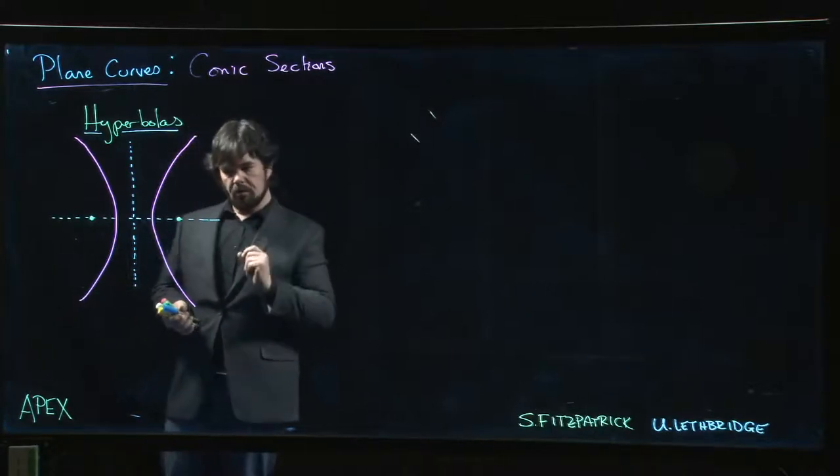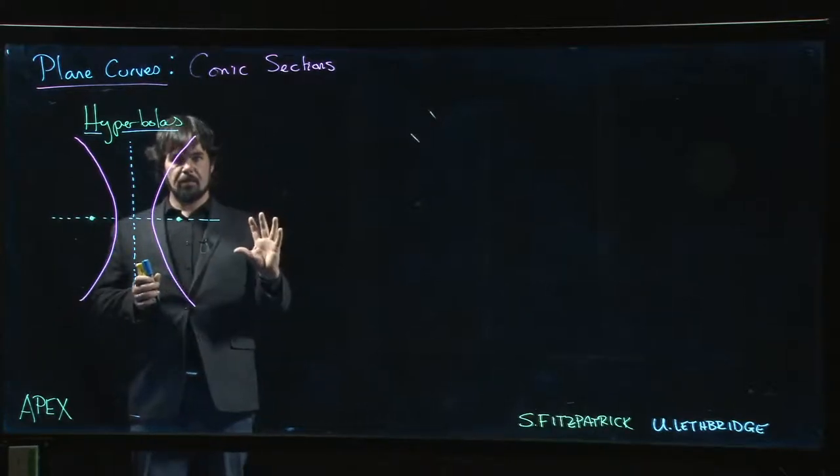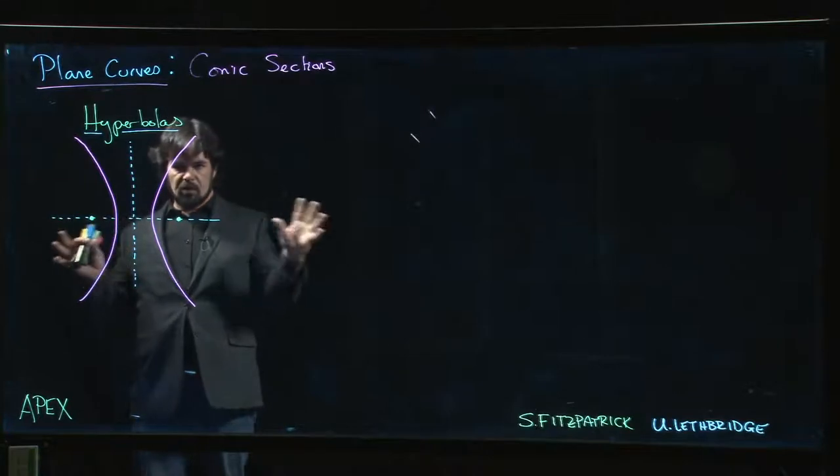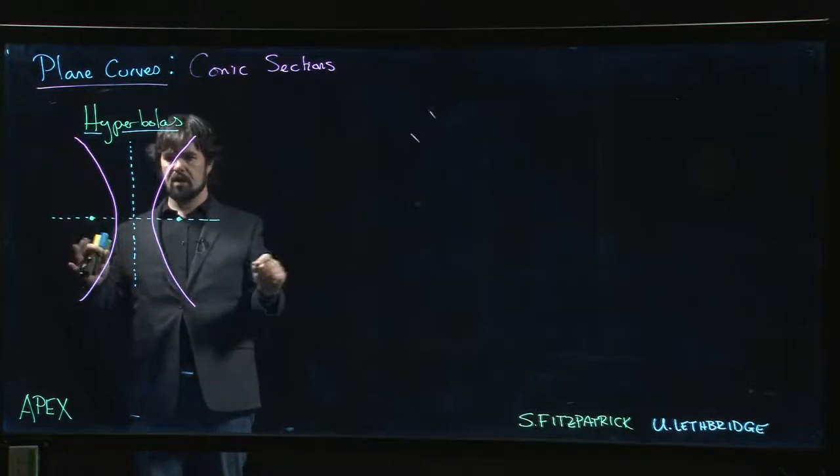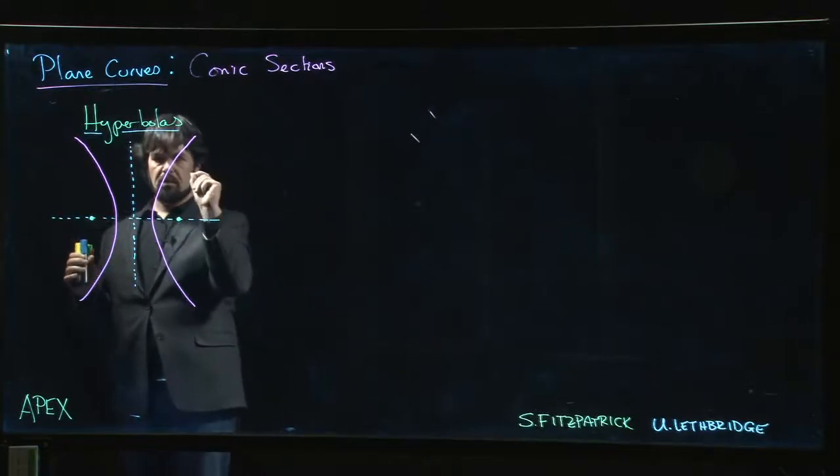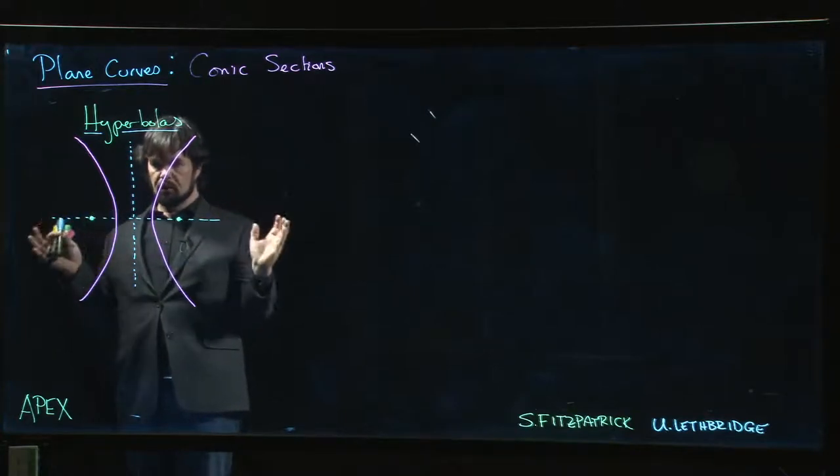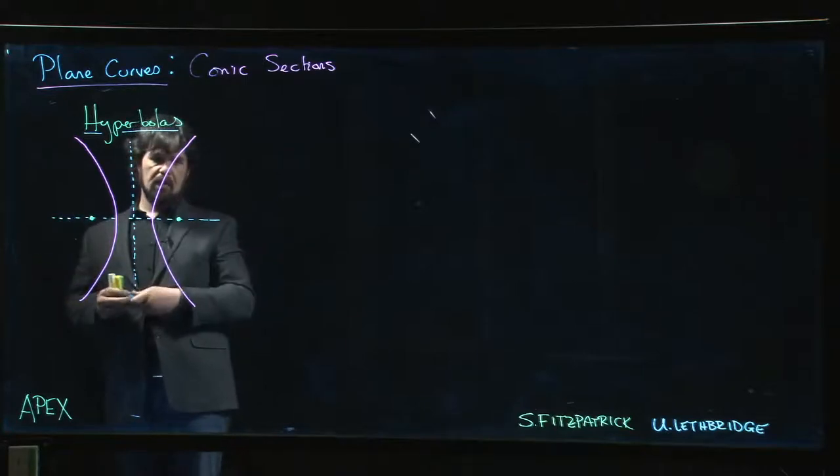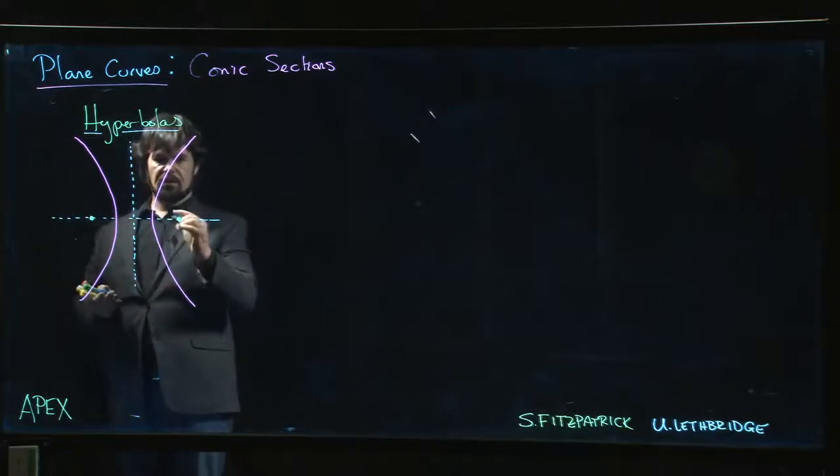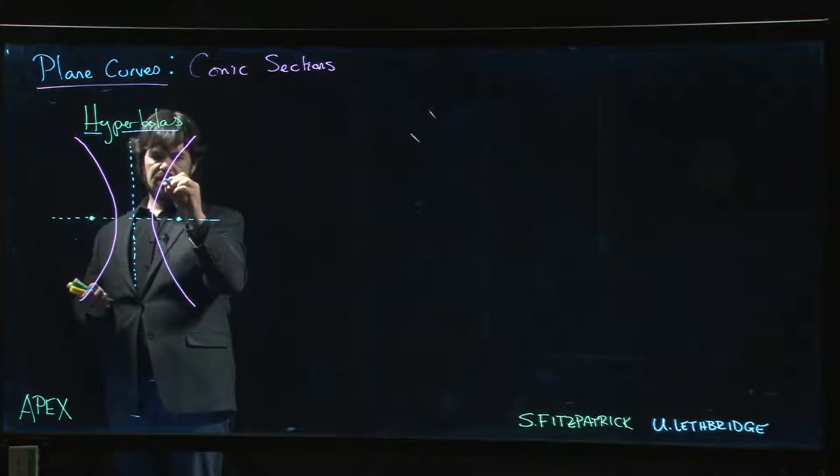There's just one small change. In an ellipse, the locus of points has the property that the distance between any point on the curve and two foci, the sum of those two distances is always a constant. Well, for a hyperbola it's not the sum that's a constant, it's the difference.